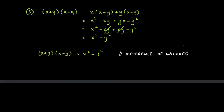The third formula we'll see frequently is the difference of squares. What happens if one factor has a plus and the other has a minus? We start the same way: x times (x − y) and y times (x − y), giving x squared minus xy, then yx minus y squared.